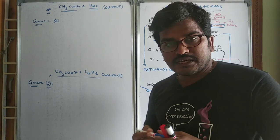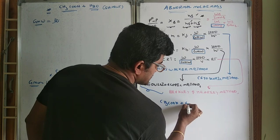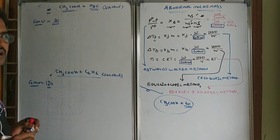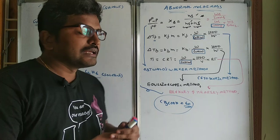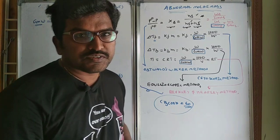Why is it coming as 30 in water and 120 in benzene? Originally, CH₃COOH has a molar mass of 60. This caused great surprise. To overcome this issue, Van't Hoff is the scientist who did many experiments and gave conclusions about abnormal molar mass.